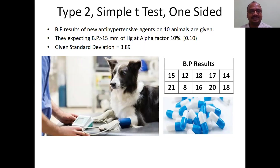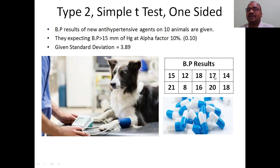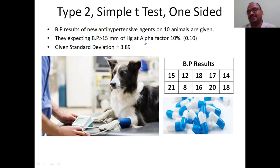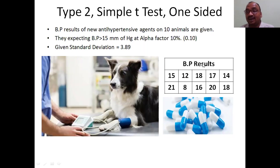Ten animals — animal 1, animal 2, animal 3, animal 4 — these are the BP results of the 10 animals. What they are expecting is that BP should be greater than 15 mmHg, and this is what they actually got from the 10 animals.